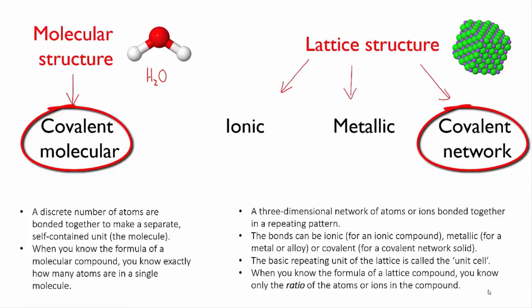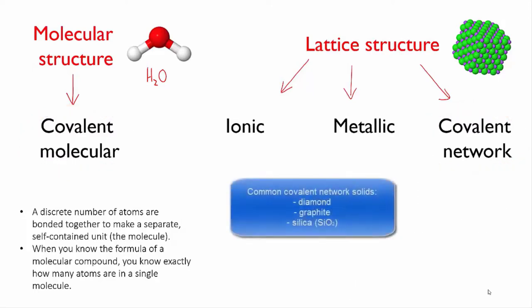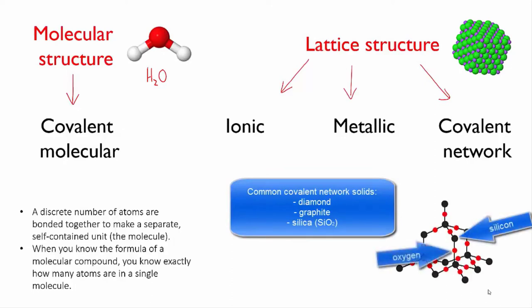The three most common covalent network substances that you need to know about are diamond and graphite, which you've already met, and silica or silicon dioxide, SiO2. This is the main component of sand, and it forms a tetrahedral structure much like diamond, except that each silicon atom is separated from the next by an oxygen atom.